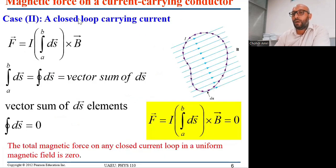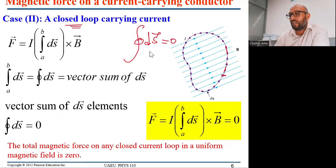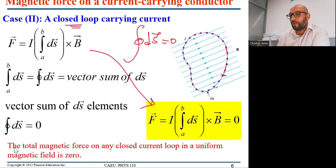For a closed loop, the path integral of dS equals zero because we return to the starting position — the displacement is zero. Therefore, the total magnetic force on any closed current loop in a uniform magnetic field is zero.